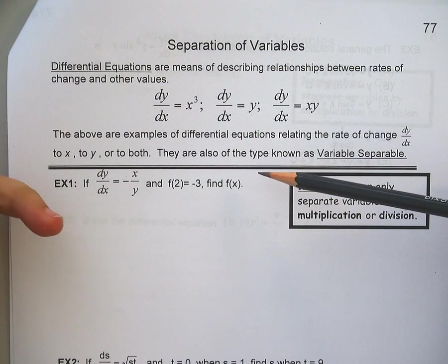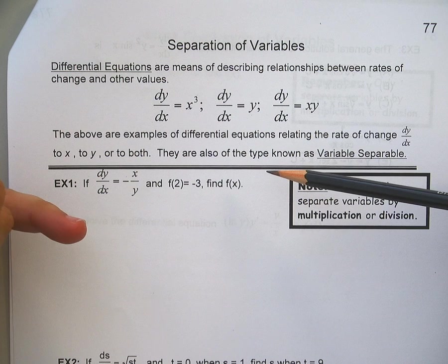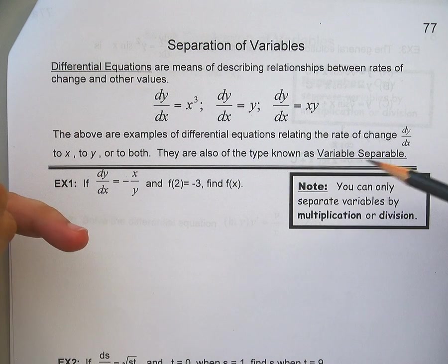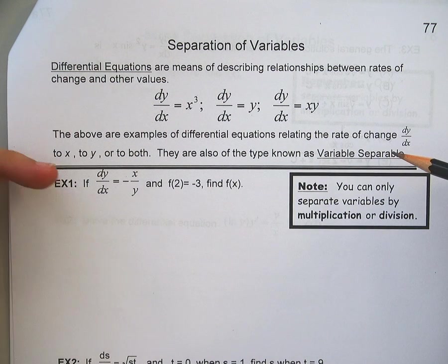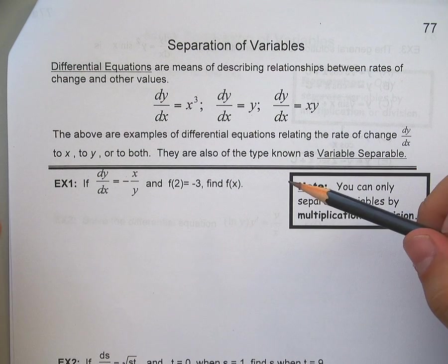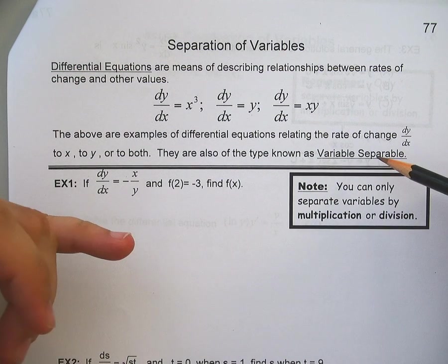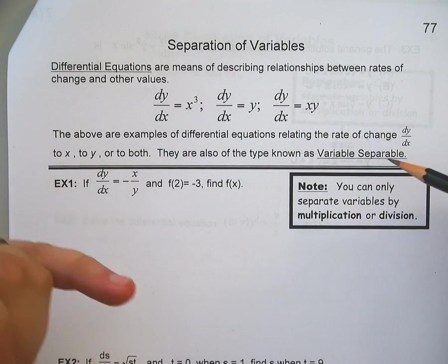The above are examples of differential equations relating the rate of change dy/dx to x, y, or both. They're also known as variable separable.